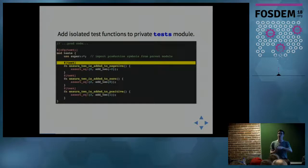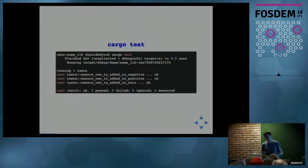You write various test functions inside and annotate each individual test with test. Then when you run Cargo test, it builds all the production code, builds the test code, and actually runs all of those test functions.